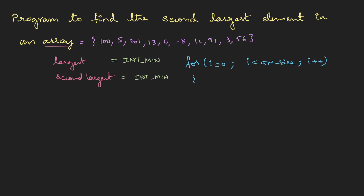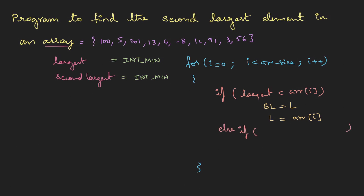In the loop, if 'largest' is less than any array element, I'll store 'largest' into 'second_largest', then store the new large value into 'largest'. Other than this, there is another possibility — there should be an else-if condition. Let me show it with a diagram. The second largest is somewhere here and largest is here. This condition happens when the element is greater than both largest and second largest.